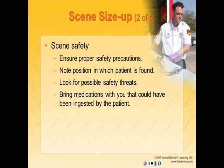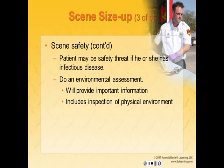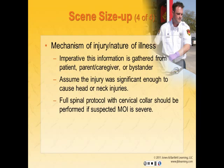Ensure proper safety precautions have been taken. Note the position in which you find your patient and look for possible safety threats including spilled toxins, open containers of alcohol, drug paraphernalia, weapons, or fire. Bring medications that could have been ingested to the emergency department. Perform an environmental assessment to gather information on the chief complaint, number of patients, mechanism or nature of illness or injury, and ongoing health risks. Dangerous scene conditions and inappropriate statements from caregivers may lead you to suspect intentional injuries or abuse. Gather mechanism of injury or nature of illness from the patient, parent, caregiver, or bystanders. Full spinal protocols with a cervical collar should be performed if you suspect severe mechanism. Remember to pad under the child's head or shoulders to facilitate a neutral position for airway management.